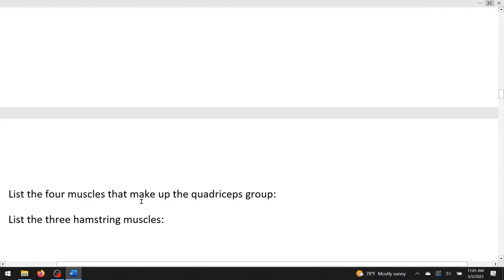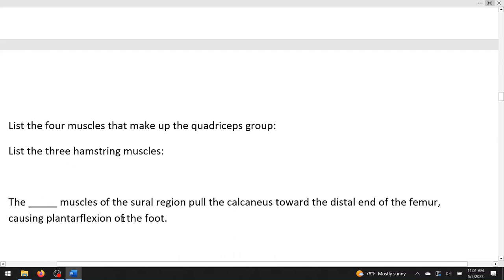List the four muscles that make up the quadriceps group. Makes sense there would be four. There would be rectus femoris, and then three vastus muscles. Vastus lateralis, vastus medialis, and vastus intermedius. List the three hamstring muscles. This would be biceps femoris, semitendinosus, and semimembranosus. The blank muscles of the sural region, that means the calf region, the lower leg, pull the calcaneus, the foot bone, toward the distal end of the femur, causing plantar flexion of the foot. So what that means is stand on your tippy toes. So what are the tippy toe muscles? You could argue it could be gastrocnemius and soleus. That would be the main two tippy toe muscles.